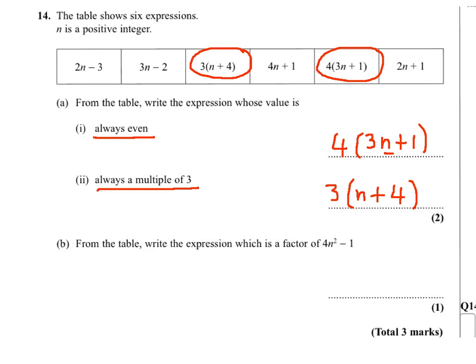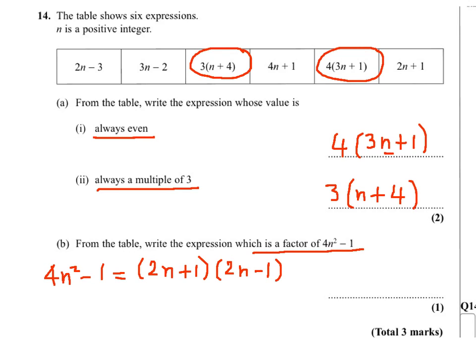And an expression which is a factor of 4n²-1: 4n²-1 is the difference of two squares, with 4 being a square number, n² being a square, and 1. So it factors as (2n+1)(2n-1). And here we have the expression 2n+1.